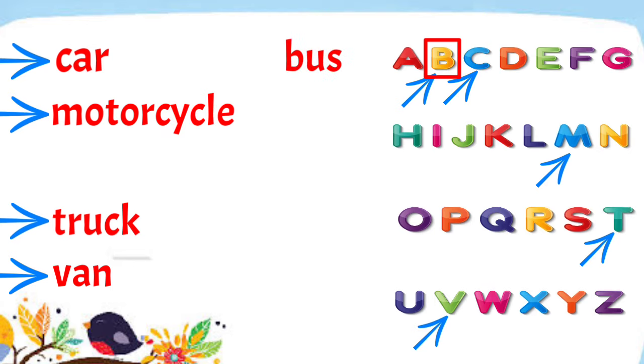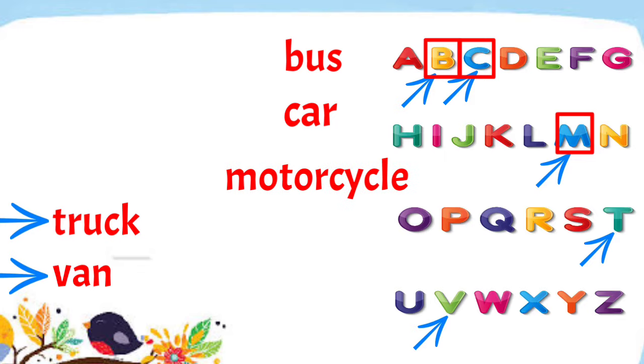The next letter is C. So let us put car after bus. Now, what should be the next letter? It's letter M. So let us put motorcycle next. And the fourth letter in the group is T.